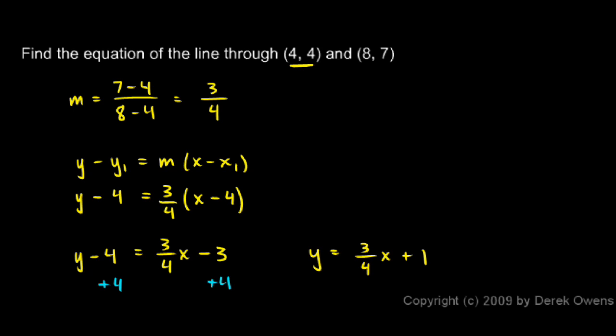And that's the equation of the line in slope-intercept form. And a quick sketch can show you that this works. If I imagine these points (4, 4), that's one of the points that I was given, and (8, 7) would be about there.